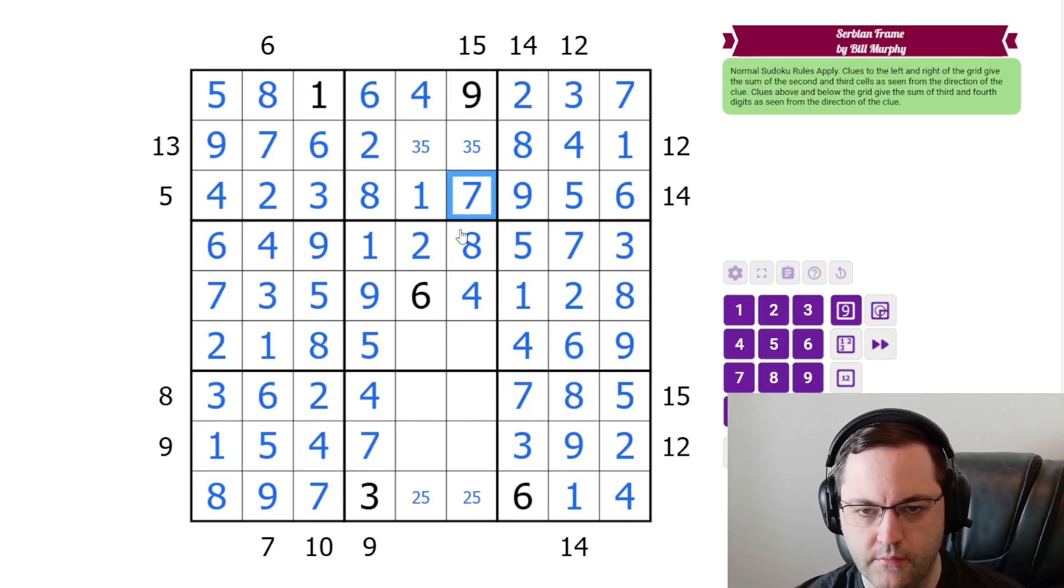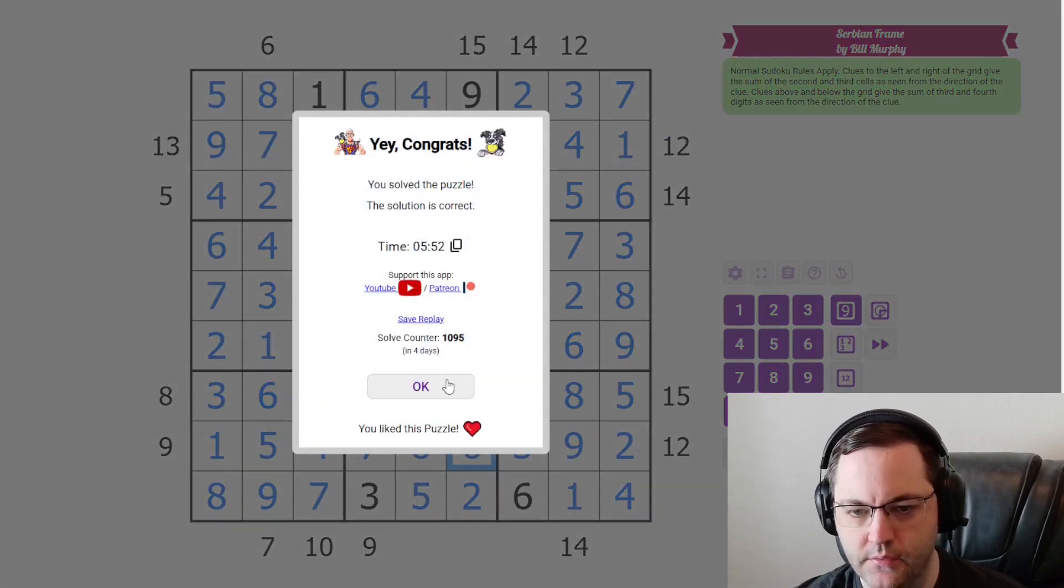These are three, seven. Got a seven there. So seven and three, three and five, five and two. These are nine, one, and these are eight and six, and that's the solution.